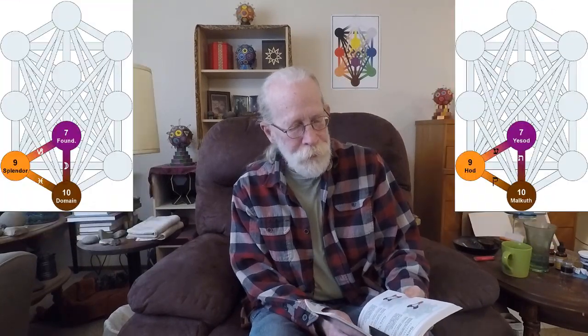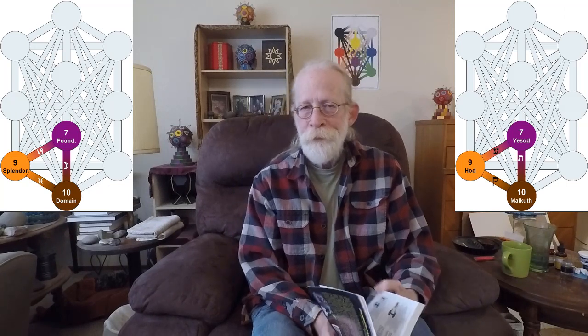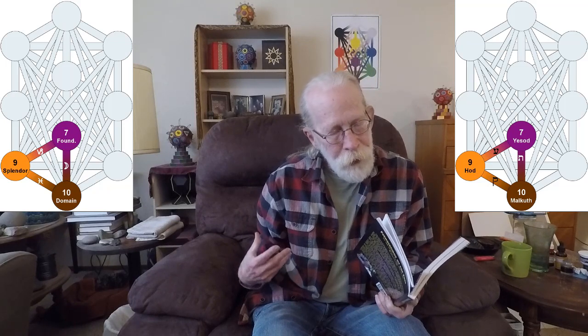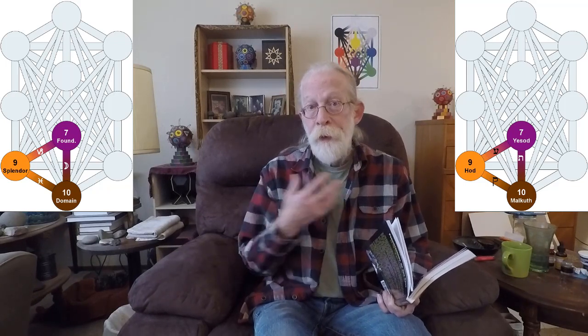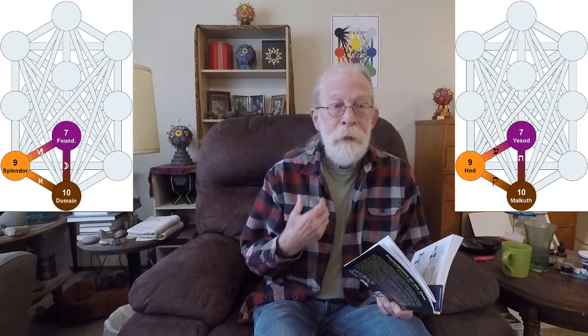Our first gate is number 167, and it begins in Hod, travels down Pisces to Malkuth, up the moon to Yesod, and down Capricorn to Hod, and then back around.